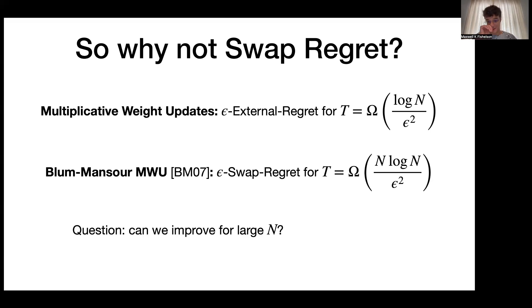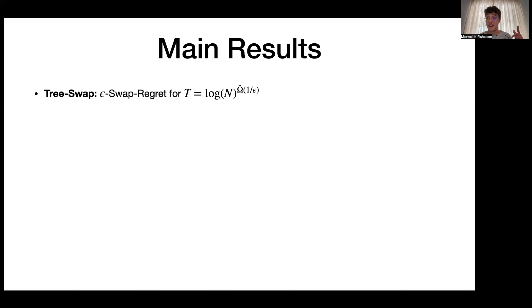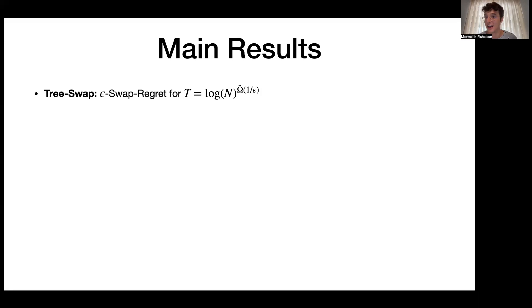Back in their 2007 paper, Blum and Mansour asked whether it's possible to improve this dependence on N. We're here to say: yes, we've solved it. Our algorithm, Tree Swap, obtains epsilon swap regret in a number of rounds logarithmic in N but exponential in 1/epsilon. There's a trade-off: improving the action-count dependence costs accuracy in epsilon. But in modern settings the number of actions far exceeds the dependence on epsilon, and small constant error is sufficient for most tasks.